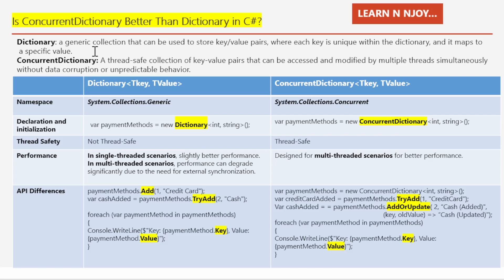ConcurrentDictionary is a special type of collection that stores key-value pairs like a regular dictionary, but it's designed to handle situations where multiple threads are accessing or modifying it at the same time, making it safe to use in multi-threaded applications without adding our own locks to prevent data corruption. Think of it like a super organized box where you and your friends can all safely add and remove named items at the same time without causing any chaos.